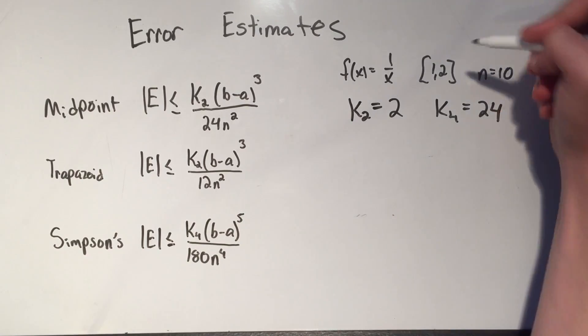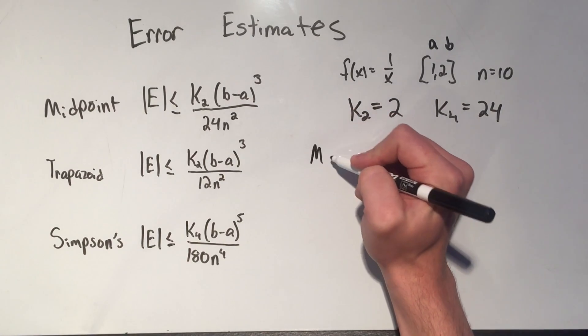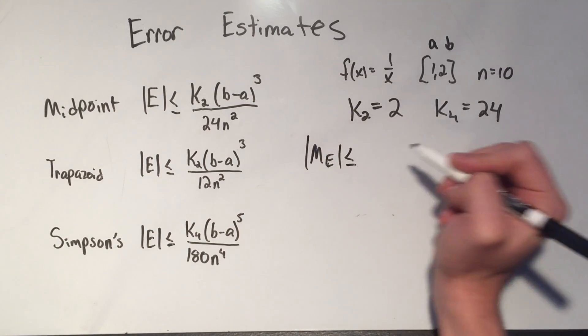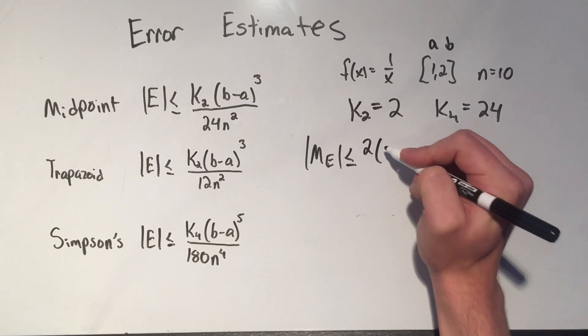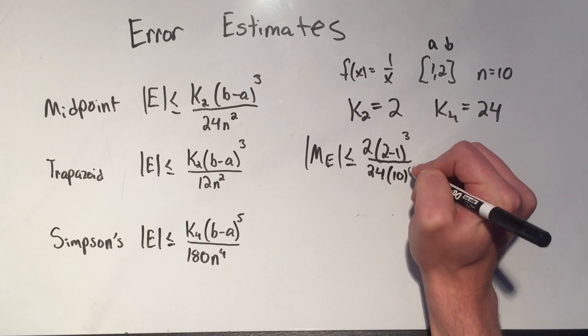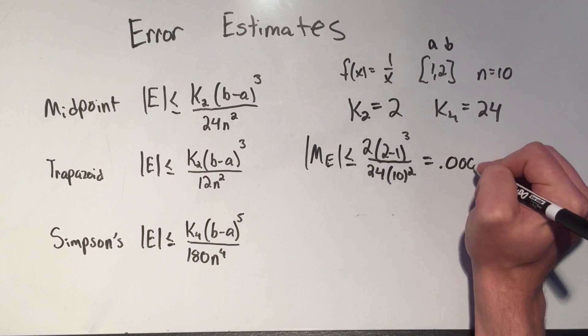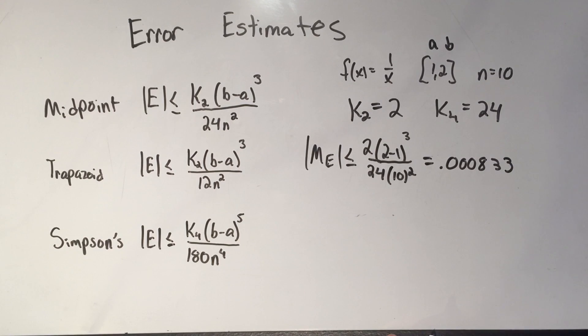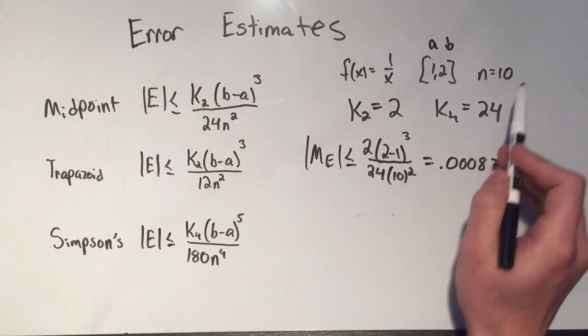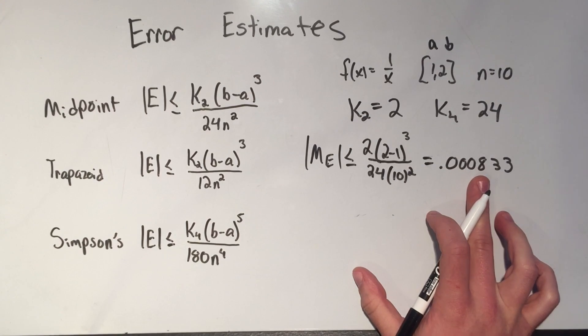And now I can just plug each of these things in. I know what my k₂ and my k₄ are, I know a is 1, I know b is 2, and I know n is 10, and I can just plug all of these things into the formula. So let me do the midpoint. So my midpoint error in absolute value is less than or equal to k₂, which is 2, b minus a, that's 2 minus 1, cubed over 24 times n², that's 10², and if you plug that into a calculator, then you are going to get 0.000833. So your error for the midpoint rule, if you did this approximation of the midpoint rule, your error would be within 9 ten-thousandths. So that's pretty good for the approximation of a definite integral.